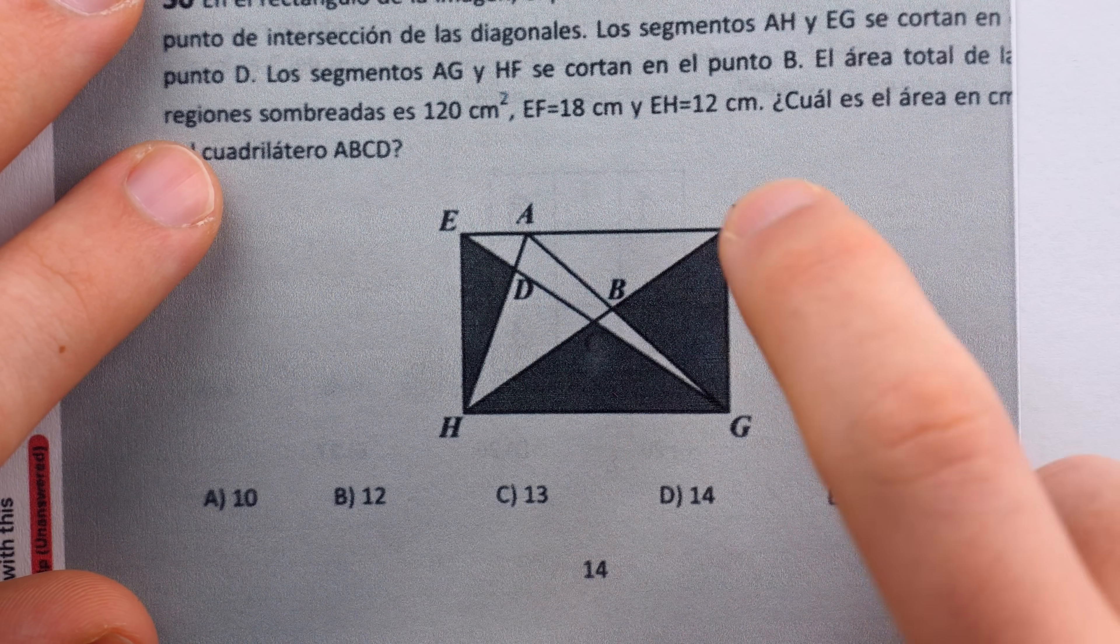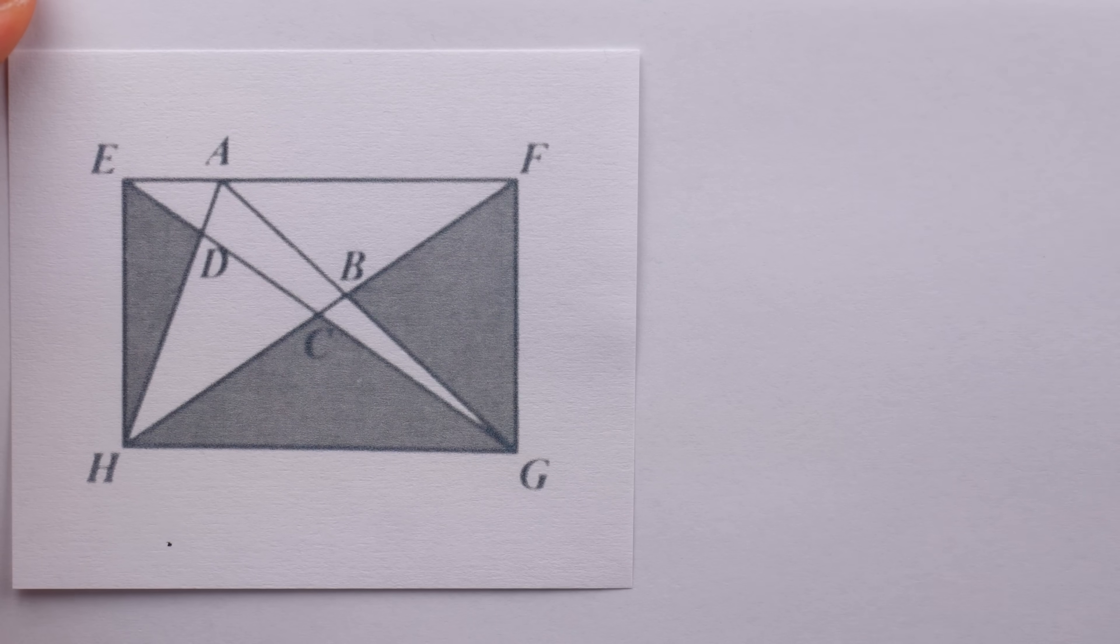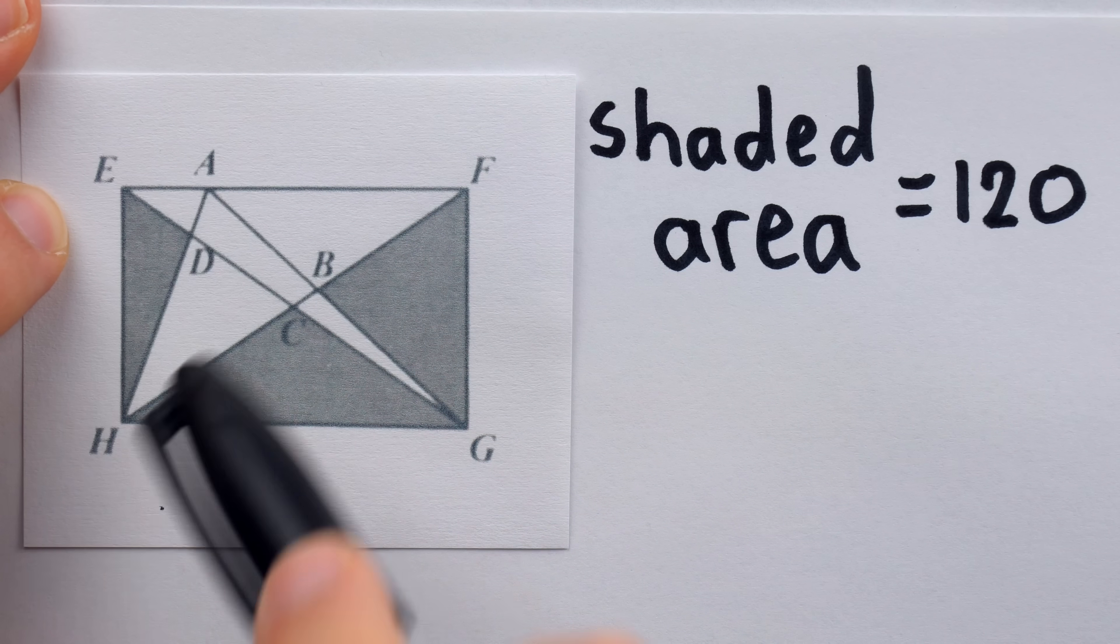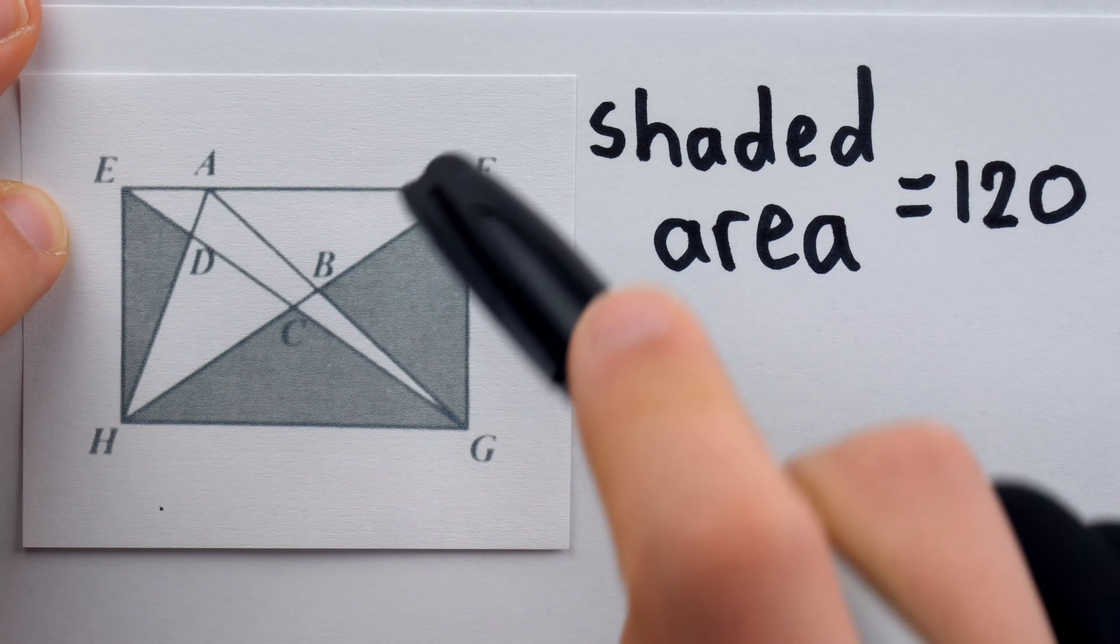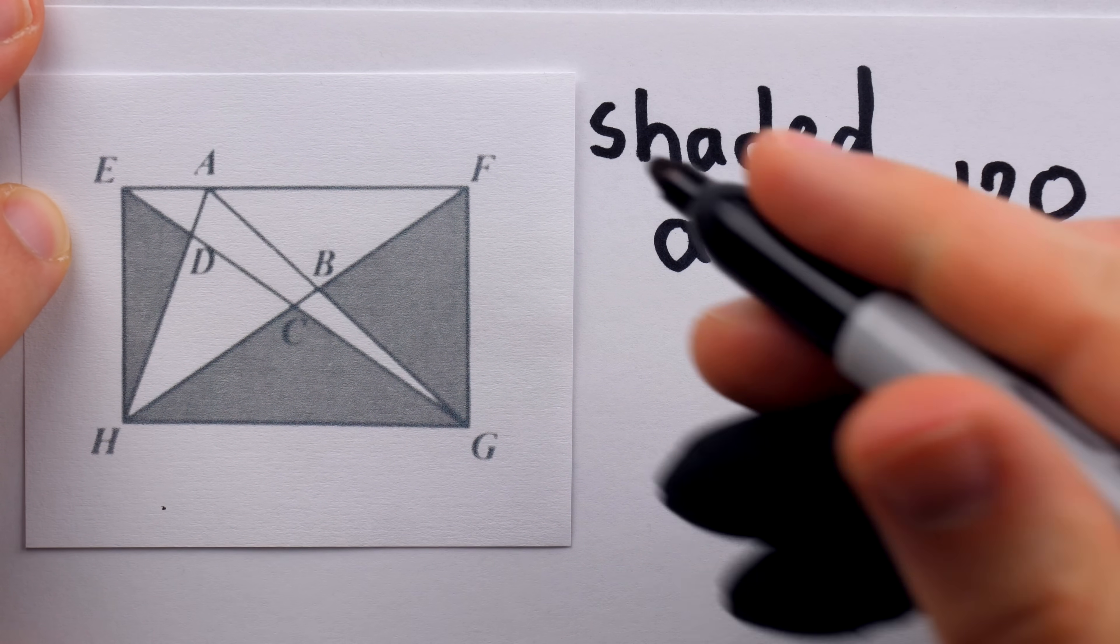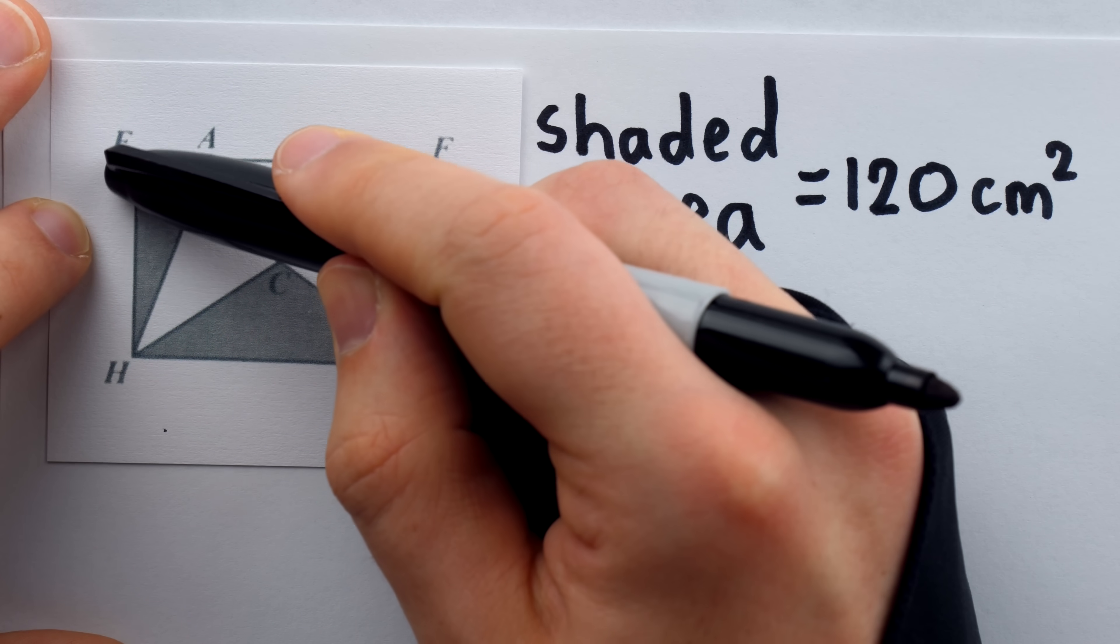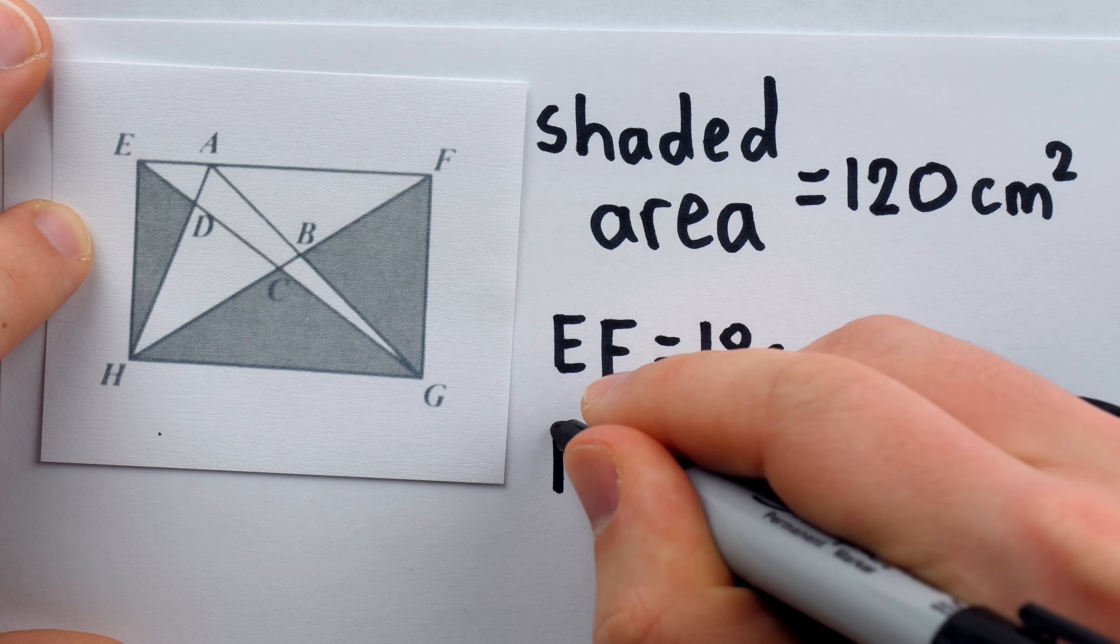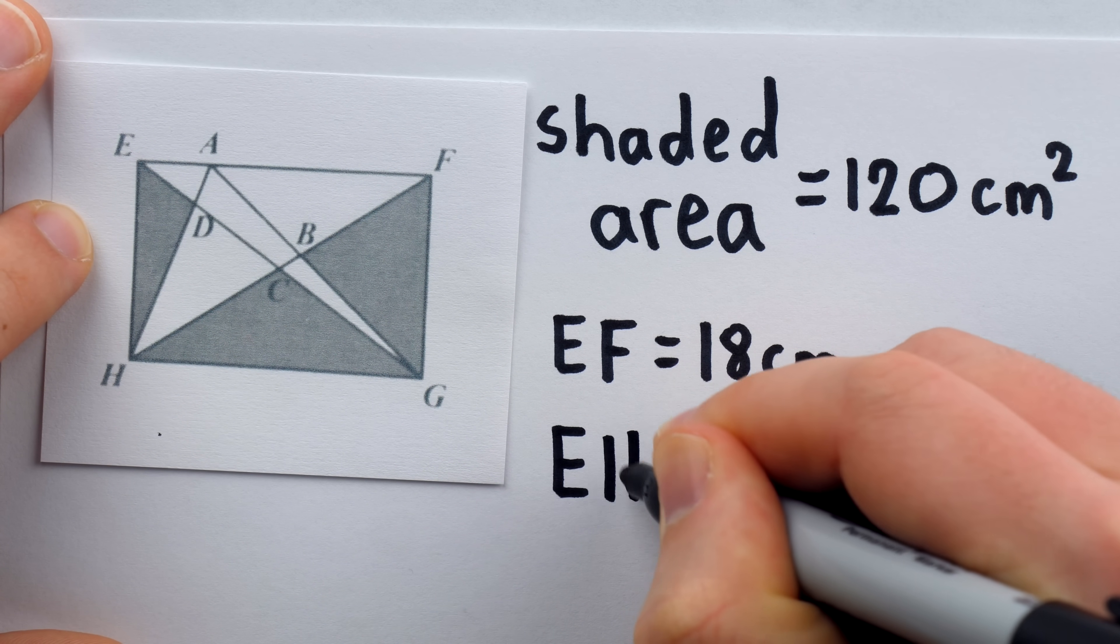It's kind of hard to see the intersection of the diagonals is labeled C, so I've printed out a brightened version. The important measurements which the problem gives to us are that the shaded area total is 120 square units. We also know that EF, the length of the rectangle, thus also HG, has a length of 18 centimeters. We also know the width of the rectangle, EH, and thus FG, are 12 centimeters long.